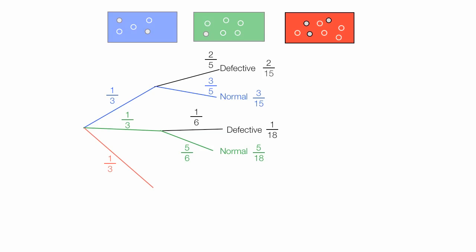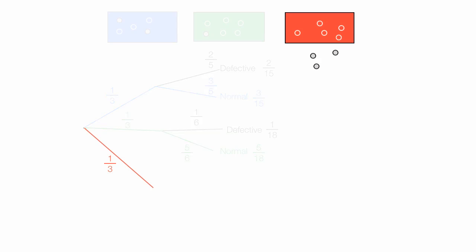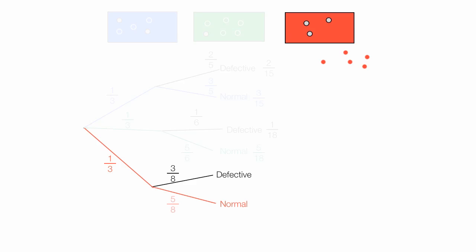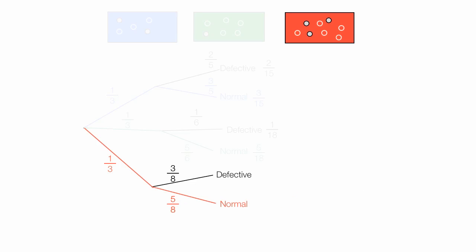Now for the red box — once I decide to pick the red box, there are three defective parts out of a total of eight, so there's a three over eight chance of picking a defective part, and a five over eight chance of picking a normal part. If I add these two branches together they'll add up to one: three over eight plus five over eight equals eight over eight, which of course equals one. So once I pick the red box, I'm going to either get a defective or a normal part.